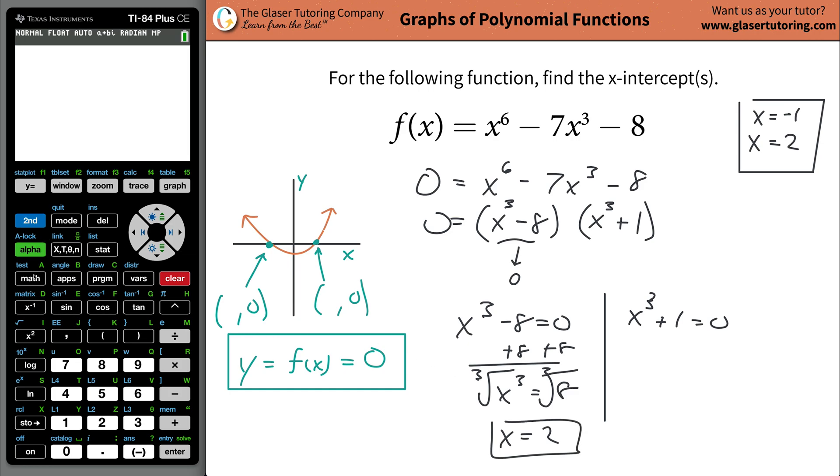If you were to take then the cube root of both sides or raise both sides to the one-third power, you would realize that this has to equal 2. You can check it in your calculator. Watch. Go to math. Get the cube root number 4. And then hit 8. Hit enter. 2.